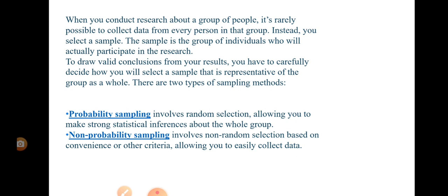Non-probability sampling involves non-random selection based on convenience and other criteria. Here you don't choose randomly — you fix your criteria and choose based on convenience. Whatever is easy for me, I will select that. This is known as non-probability sampling, and here there will not be equal chance to be selected, because we have already decided which sample to take. This is the basic difference you have to remember.